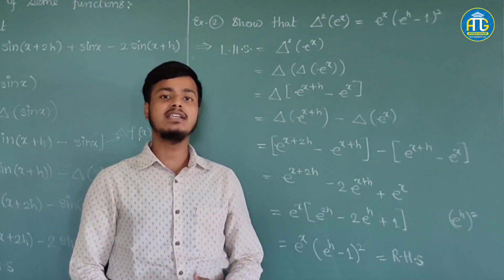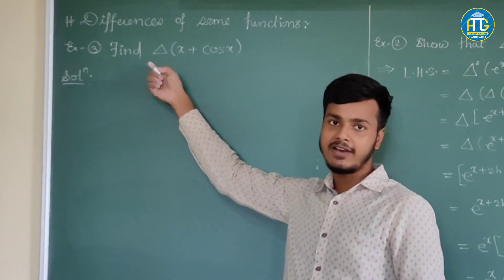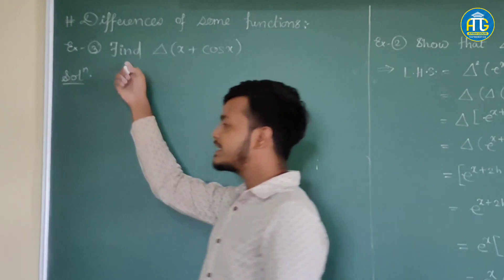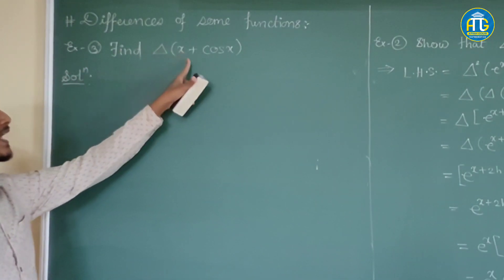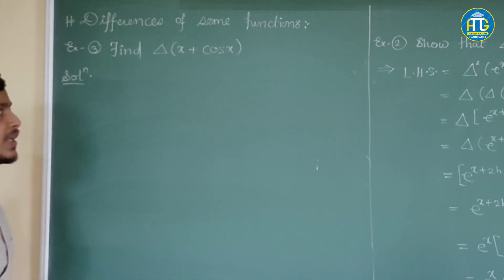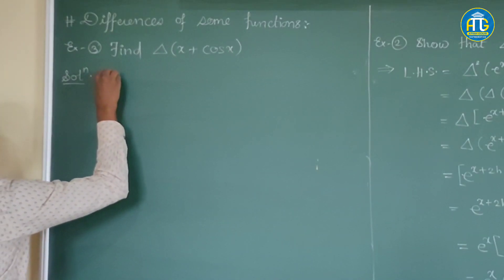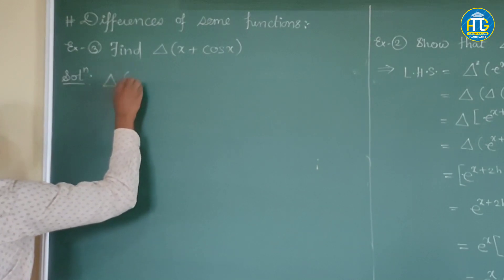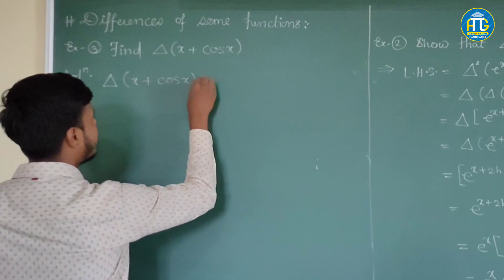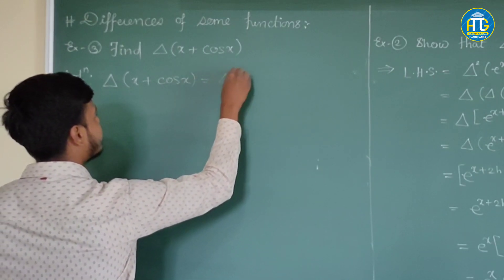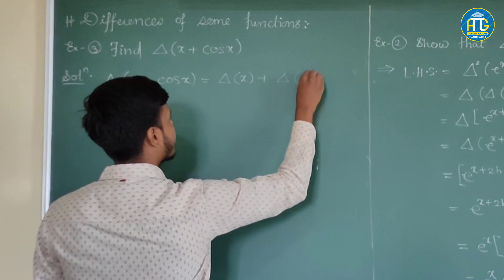Now let us take the third problem. This example says: find the forward difference of x + cos x. Forward difference of (x + cos x) is equal to the forward difference of x plus the forward difference of cos x.